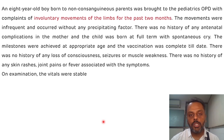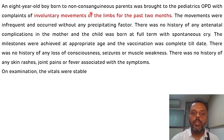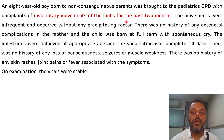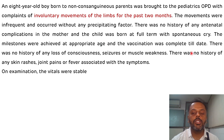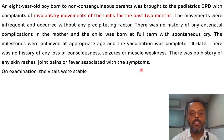The case description: an eight-year-old boy born to non-consanguineous parents was brought to the pediatric OPD with complaints of involuntary movements of the limbs for the past two months. The movements were infrequent and occurred without any precipitating factor. There was no history of antenatal complications, and the child was born at full term with spontaneous cry. There was no history of loss of consciousness, seizures, muscle weakness, skin rashes, joint pains, or fever.